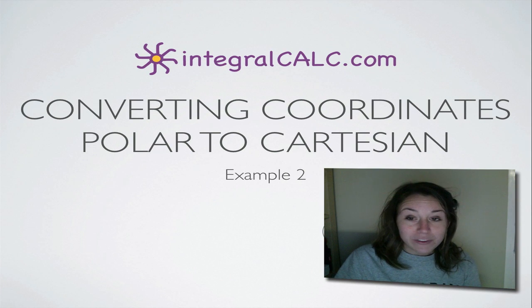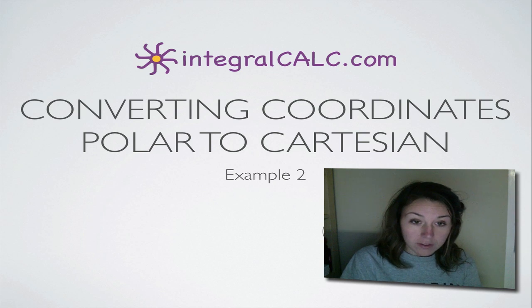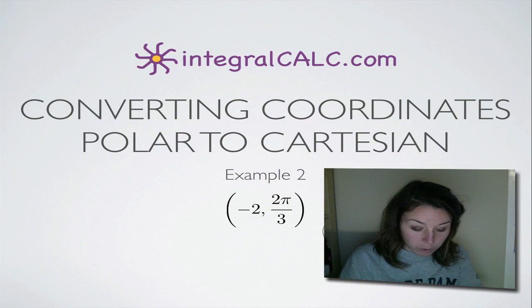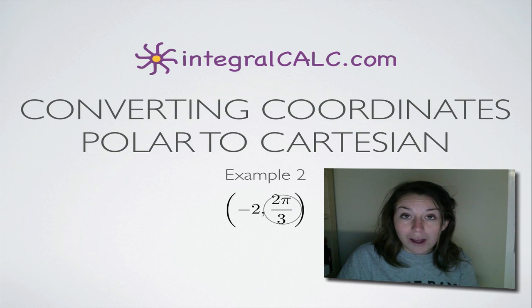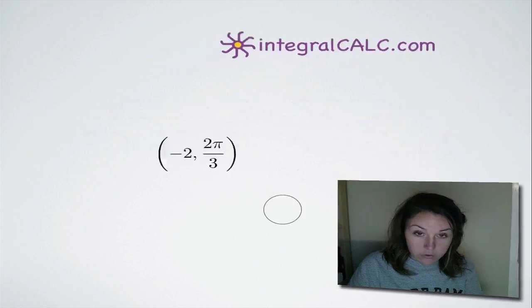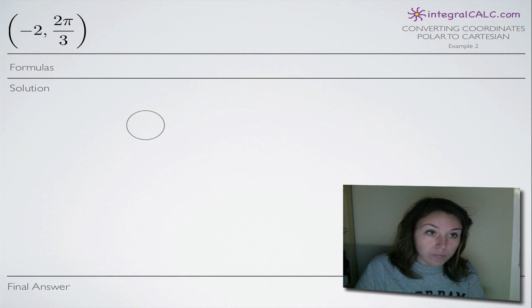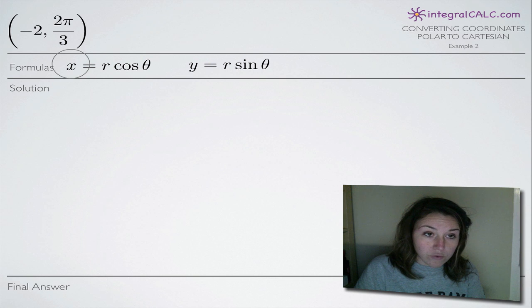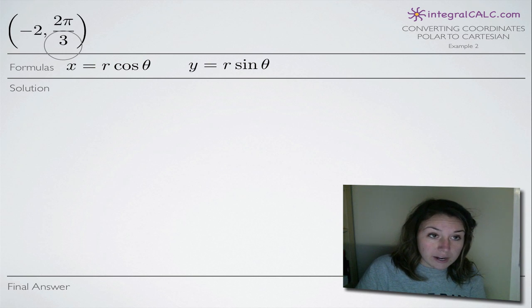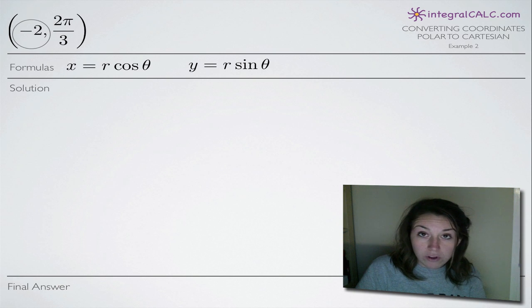We're going to be doing another example where we convert polar coordinates to Cartesian coordinates. In this example, our polar coordinate is the point, and our polar point here represents: negative 2 is r and 2pi over 3 is theta.